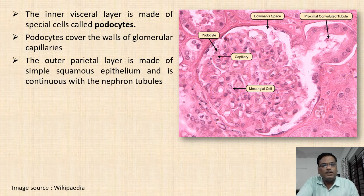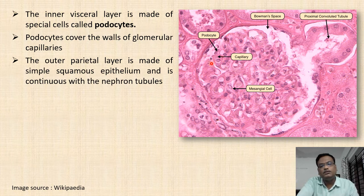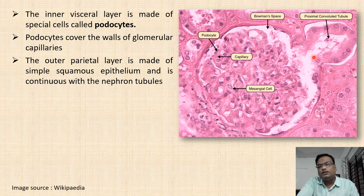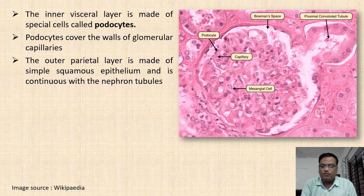The inner visceral layer is made up of spherical cells called podocytes, which cover the walls of the glomerular capillaries. The outer parietal layer is made up of simple squamous epithelium, which continues with the nephron tubules. The proximal convoluted tubule is made up of a special type of cells called brush border cells, which can be seen at higher magnification.